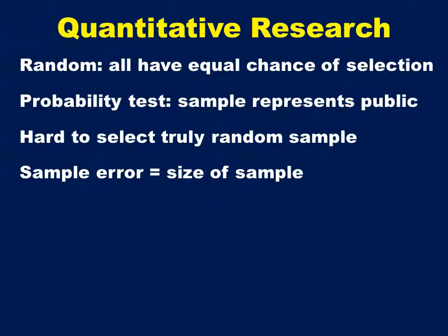Sample error, often quoted as plus or minus a given percentage, is a function of the size of the sample, based on the assumption that the sample is randomly selected. The larger the sample size, the smaller the sample error. Critical studies, such as medical trials, will usually have a large sample size so that the sample error is plus or minus one percent.